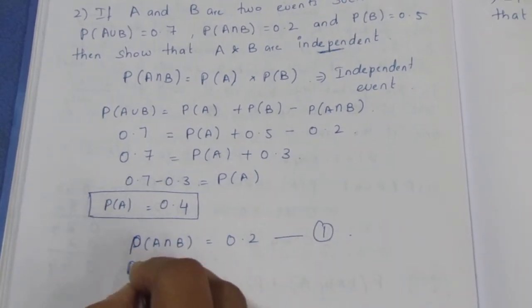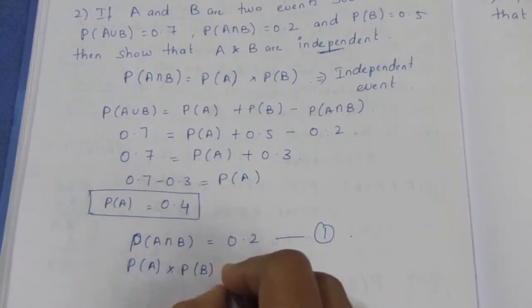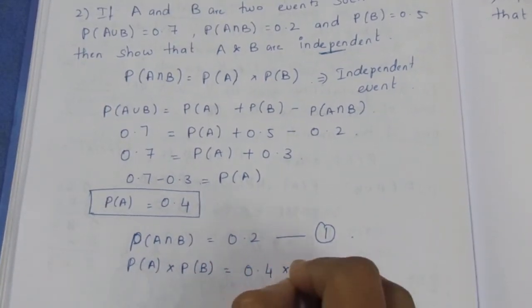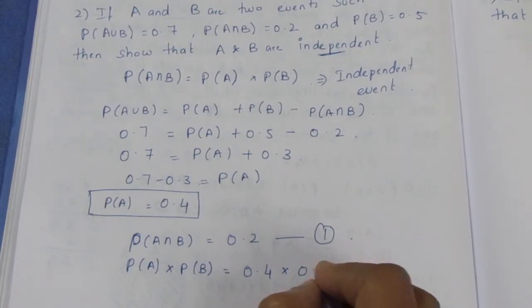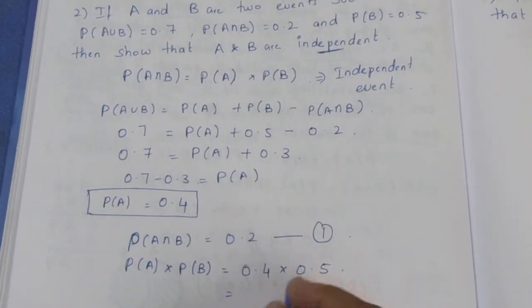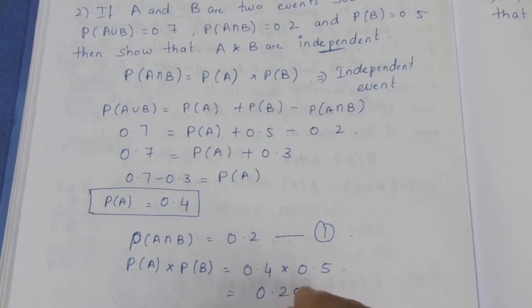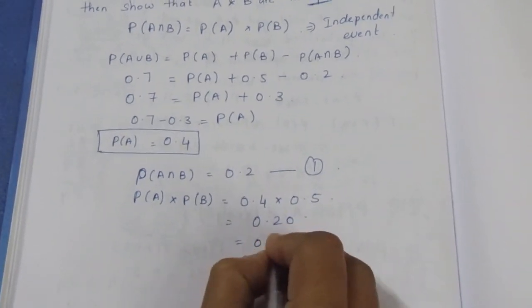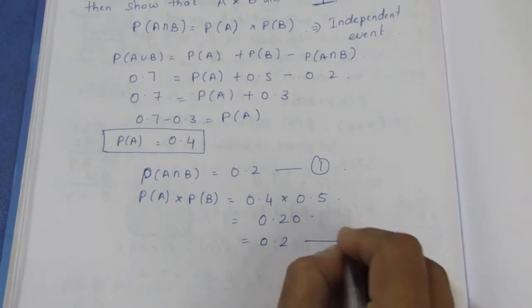P(A) × P(B) = 0.4 × 0.5 = 0.20, which is 0.2. This is equation 2.